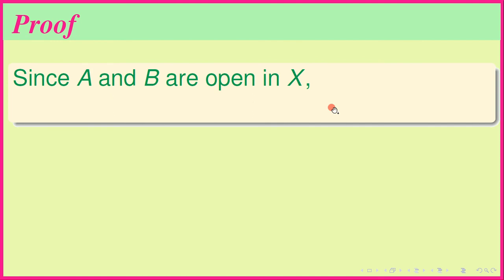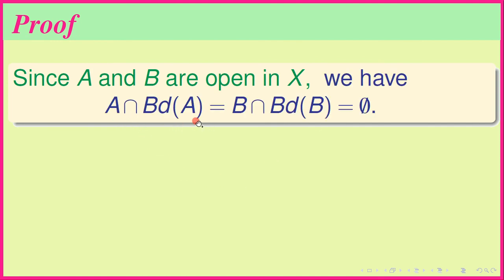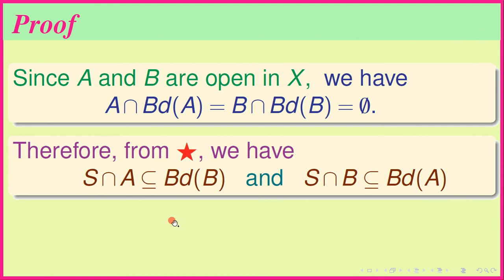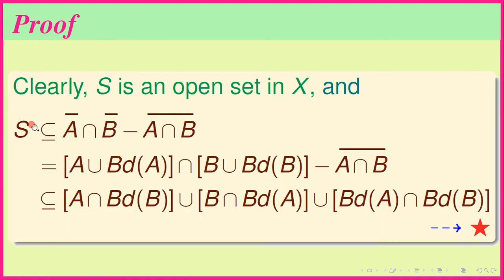Since A and B are open in X, we have A ∩ Bd(A) equals the empty set and B ∩ Bd(B) equals the empty set. This is because Bd(A) equals Ā minus A, so its intersection with A is empty; similarly for B. Therefore from (★), S ∩ A is contained in Bd(B) and S ∩ B is contained in Bd(A).